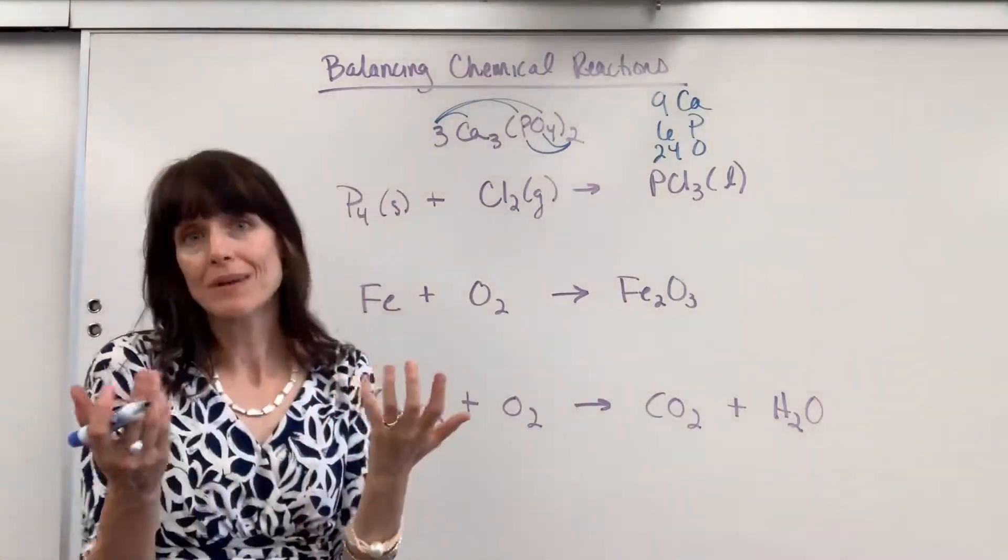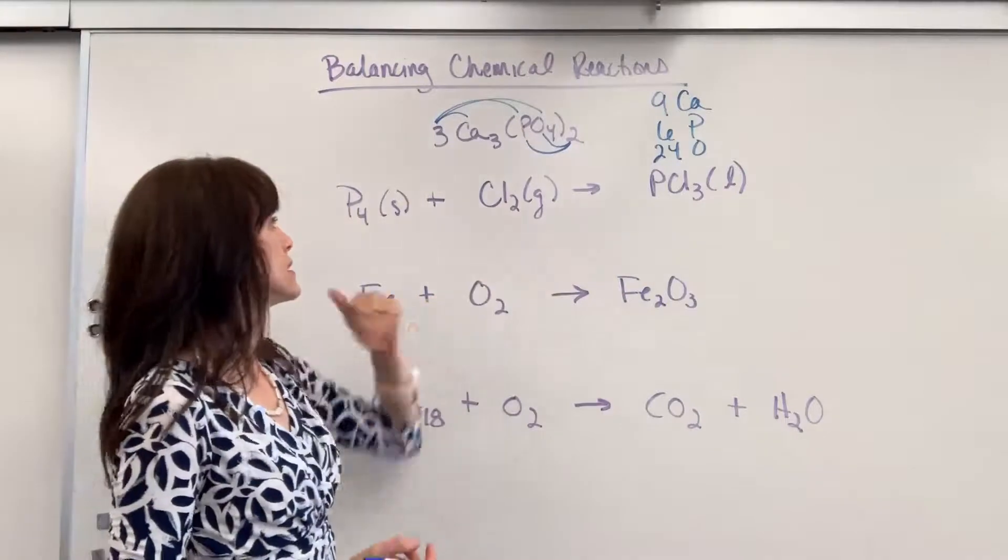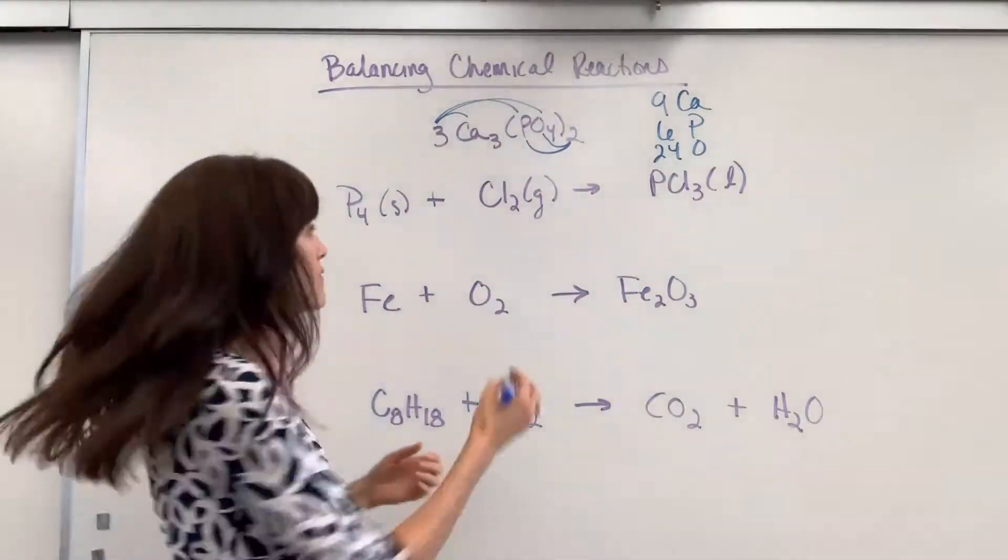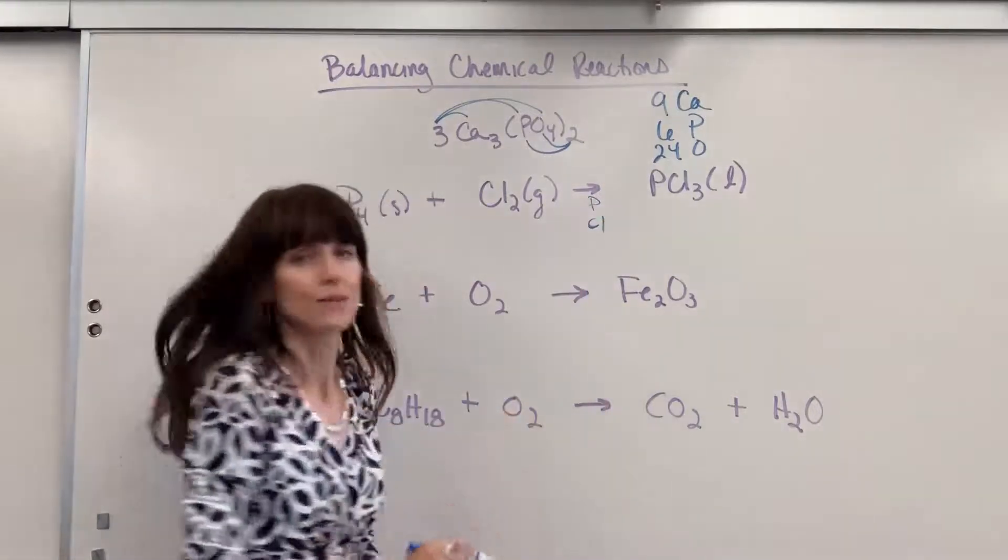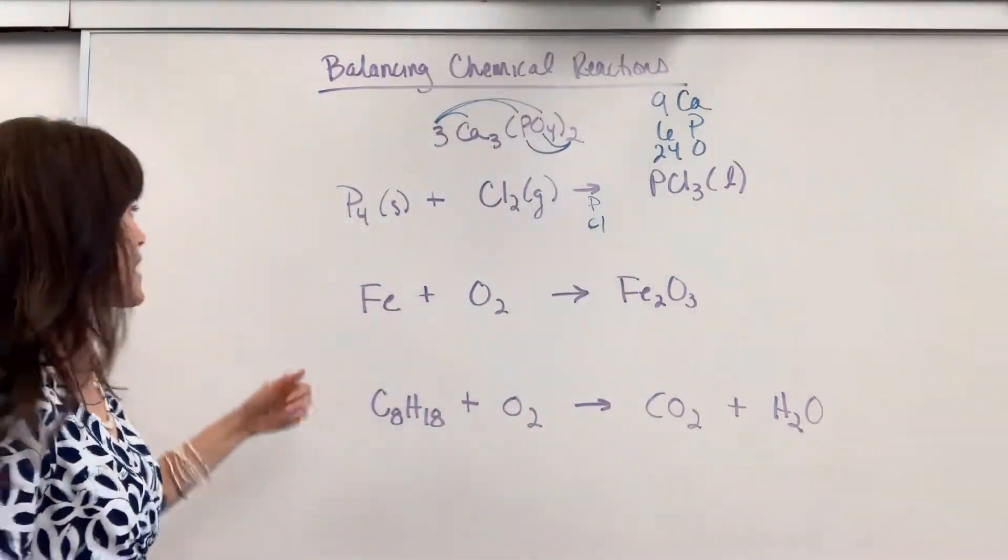So to begin, I recommend that you do it this way. Underneath the yield sign, write down every type of atom you have. So we're going to have a phosphorus and chlorine right here. And then count. How many atoms do you have on each side?